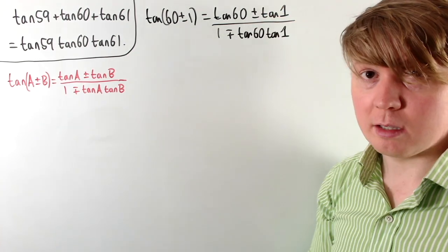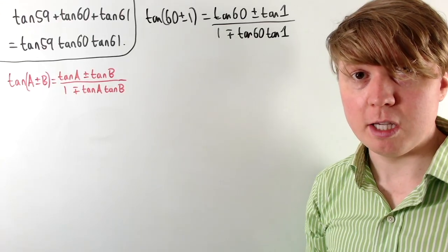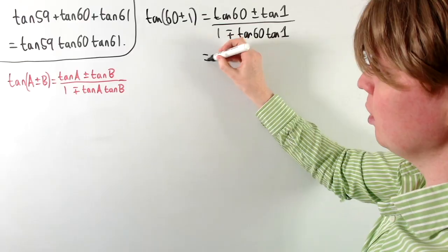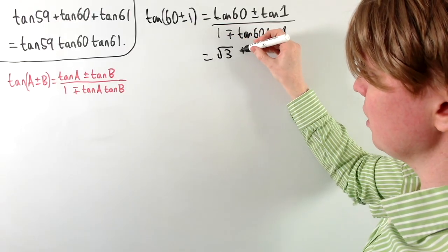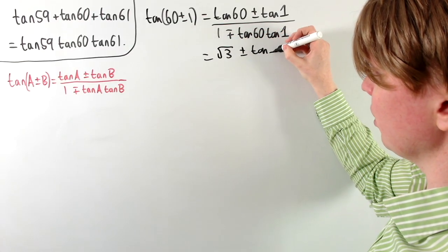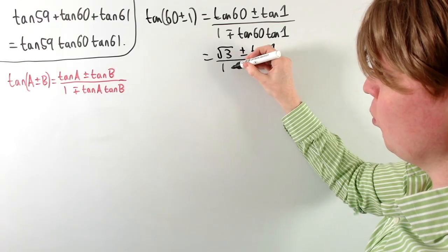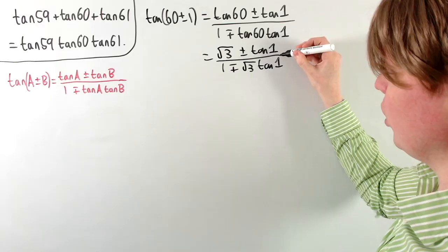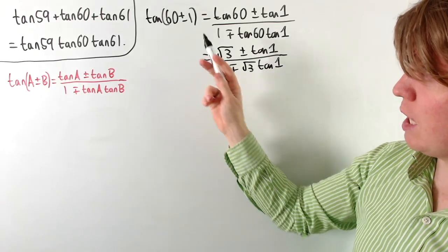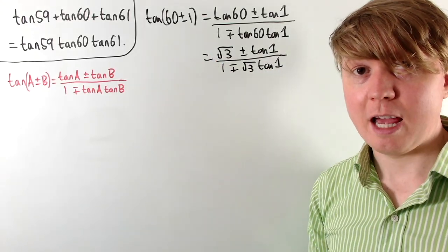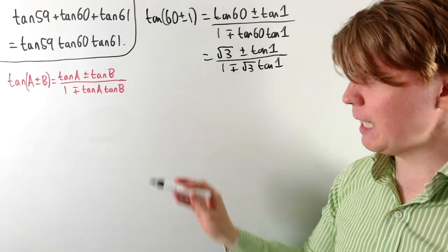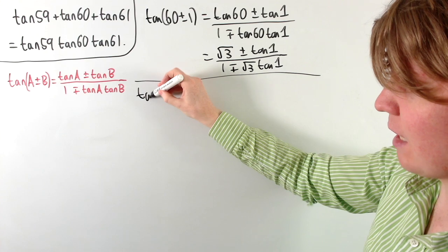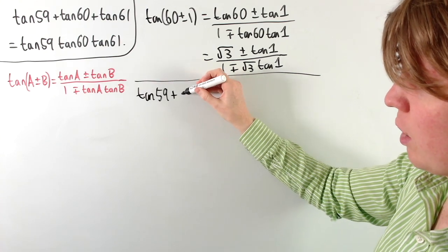We know that tan60 is just √3 — one of our classic known values. So we can simplify: tan(60 ± 1°) = (√3 ± tan1) / (1 ∓ √3·tan1). This gives us expressions for both tan61 and tan59. We'll start by adding tan59 and tan61 together, and add tan60 once we've simplified a bit.